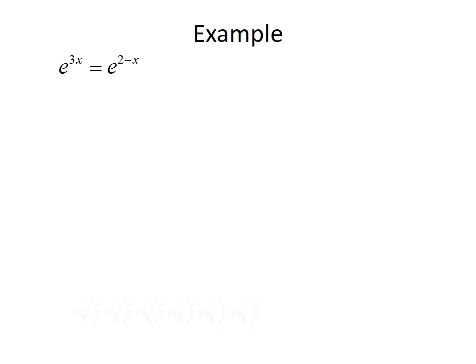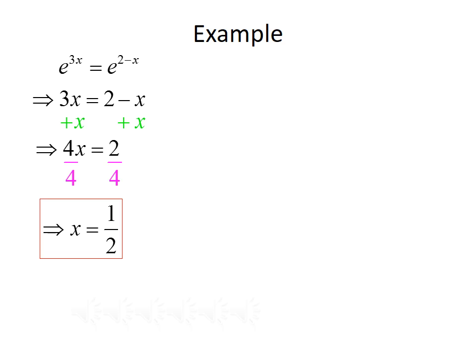Here's another example: e to the 3x equals e to the 2 minus x. Take a few minutes to try this yourself. The bases are already the same — we already have a base of e on both sides — so we can just set the exponents equal: 3x equals 2 minus x. Adding x to both sides gives 4x equals 2, then dividing both sides by 4 gives x equals 1 half.